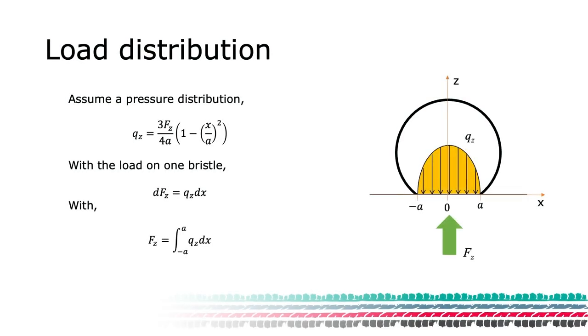To obtain the breakaway point, we saw that we could use the friction ellipse for one bristle. However, to be able to do that, we need to understand the load FZ on the bristle. We can assume that the load distribution along the contact in the longitudinal direction as a parabolic function.